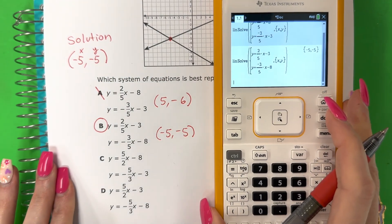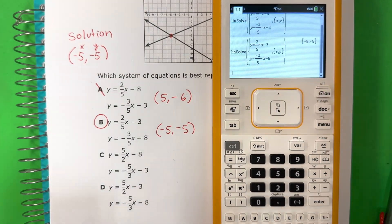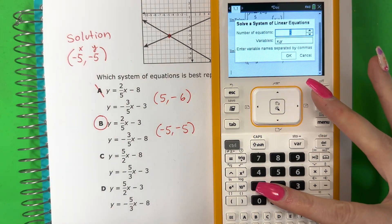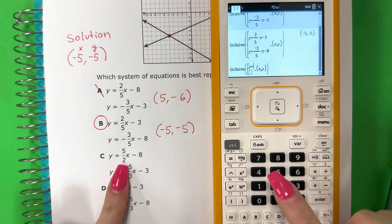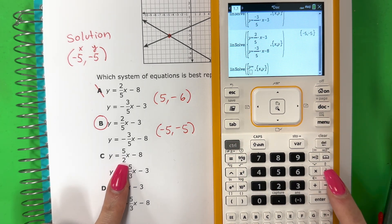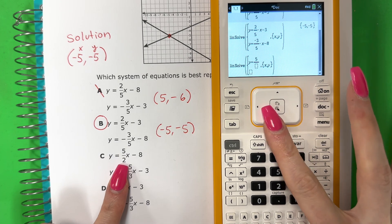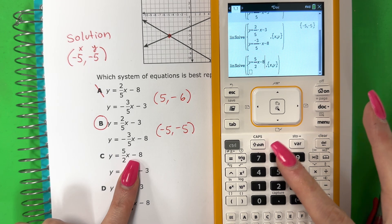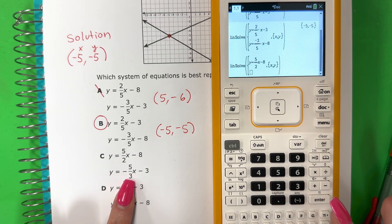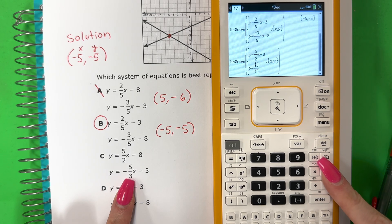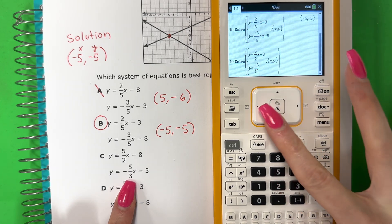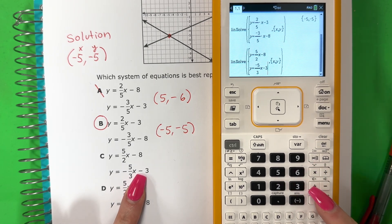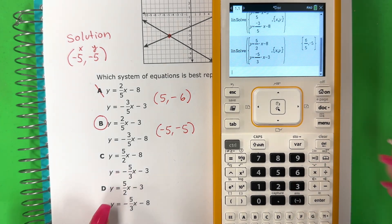Let's go ahead and do the others just for practice, solo para practicar, vamos a hacer los otros. Menu, three, two, enter. Y equals: control divide, five over two, go right, X minus eight. Go down, Y equals: control divide, negative five over three, go right, X minus three. Enter. That's different, completamente diferente — six-fifths, negative five.